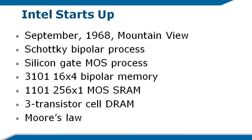Gordon Moore had published an article back when he was at Fairchild, and he observed that every year they seemed to get better and better at making integrated circuits, to the point where they could roughly double the number of parts or components on an integrated circuit in a year or two.